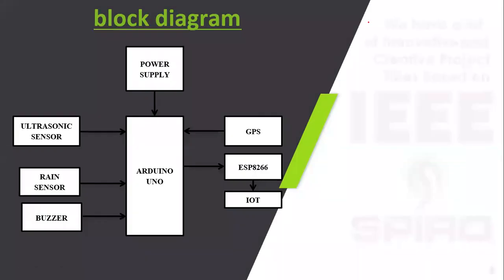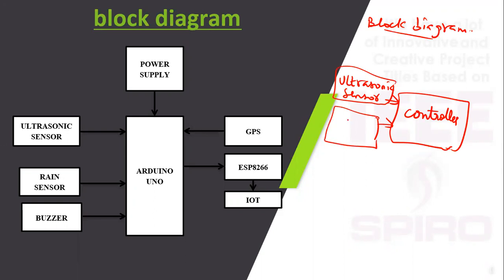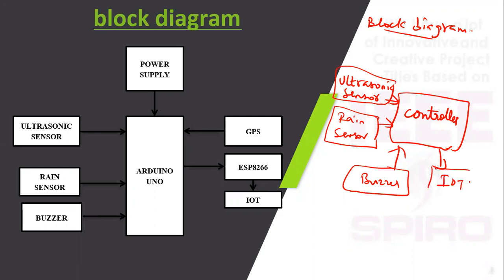This is the concept block diagram. We use a controller that detects sensor values and updates about flood detection. Using an ultrasonic sensor, we check the water level in the dam. If the water level is raised, a notification is sent with the location using IoT. A rain sensor detects rain at the dam location. A buzzer alerts for abnormal conditions. IoT displays output on a webpage, and GPS is used for location tracking.